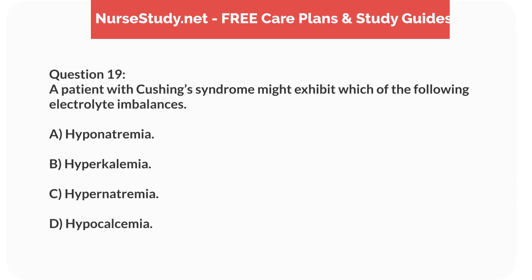Question 19. A patient with Cushing's syndrome might exhibit which of the following electrolyte imbalances? A. Hyponatremia. B. Hyperkalemia. C. Hypernatremia. D. Hypocalcemia.